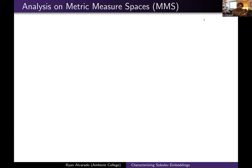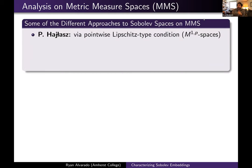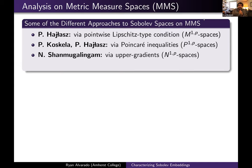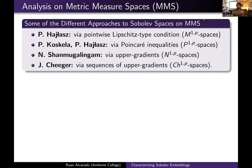Because Sobolev spaces are defined via the gradient, how would one introduce a suitable notion of a Sobolev space without a notion of a gradient? It turns out that for much of the Sobolev theory, information about the specific gradient is not necessary — it's enough to have information about the modulus of the gradient. Several successful notions of Sobolev spaces have been introduced: Hajłasz introduced spaces via a Lipschitz-type condition; Koskala-Hajłasz introduced P^{1,p} spaces using Poincaré inequalities; Shanmugalingam introduced Newtonian spaces via upper gradients; and Cheeger introduced Cheeger spaces using sequences of upper gradients.